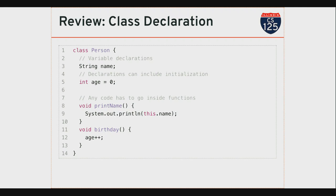I do that by declaring methods as part of my class declaration. Down at the bottom here, from line seven on, I'm declaring two methods. The first one is called printName — it doesn't return anything, takes no arguments, and simply prints the name of that person object. The second one is called birthday, and that's a function that increments the age of the person. You'll see here that I don't have to use the 'this' keyword — both line nine and line twelve are valid.